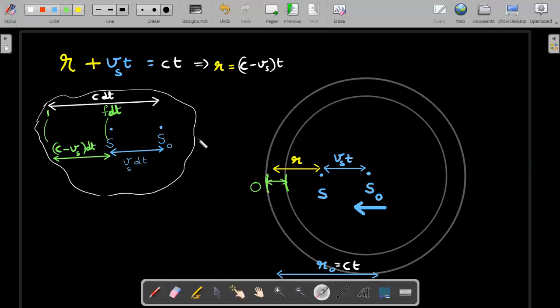That's the geometric representation I've written: R plus VsT equals CT. So the value of R in the final step that I would substitute would be C minus Vs into T. Two important calculations we did: one about C minus Vs into T, and the width to be C minus Vs into DT.